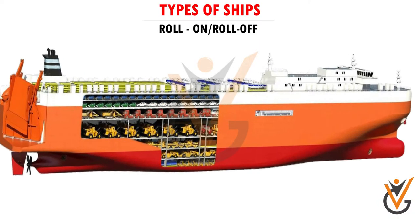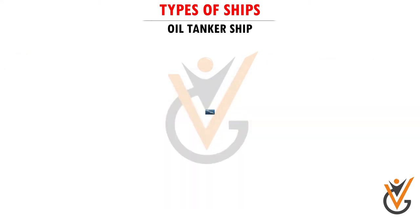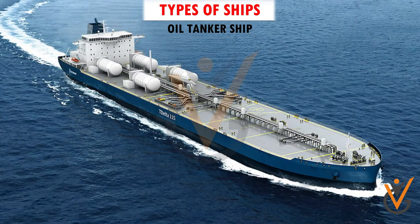Car or truck carriers are distinctive-looking ships with a box-like superstructure running the entire length and breadth of the hull, fully enclosing and protecting the cargo. They typically have a stern ramp and a side ramp for dual loading of many thousands of vehicles, as well as extensive automatic fire control systems.